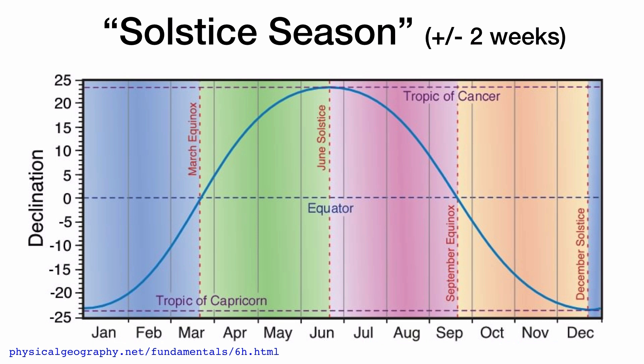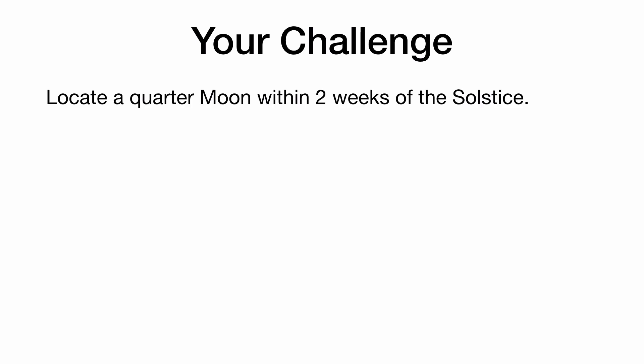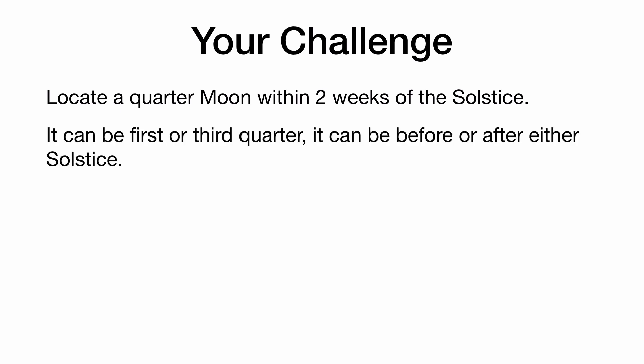Solstice season: because the sun is moving so slowly relative to latitude near the June or December solstice, we can give ourselves a grace period of about plus or minus two weeks. Your challenge is to locate a quarter moon within two weeks of the solstice — there should be two of them. It could be a first or third quarter, before or after the solstice, and either solstice.